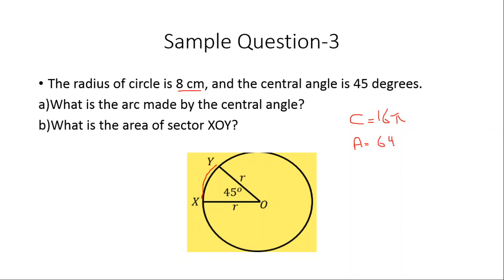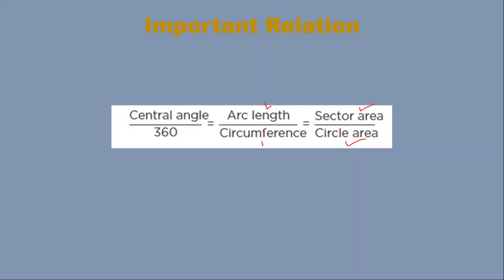After calculating the circumference and area, let us find the arc length made by the central angle. We know the relationship: central angle divided by 360 equals arc length divided by circumference.